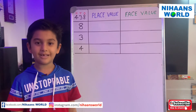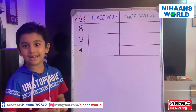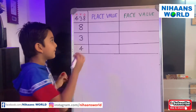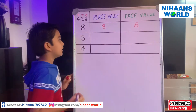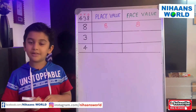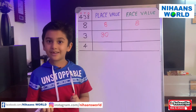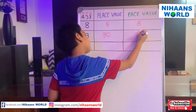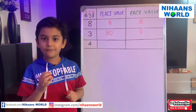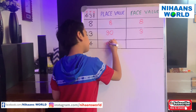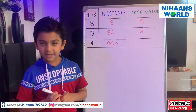Let us find out the place value and face value of each digit in the number. 8's place value is 8 and 8's face value is 8. 3's place value is 30 and 3's face value is 3. 4's place value is 400 and 4's face value is 4.